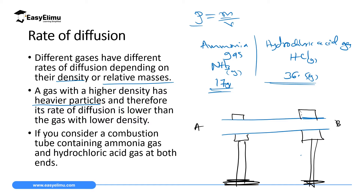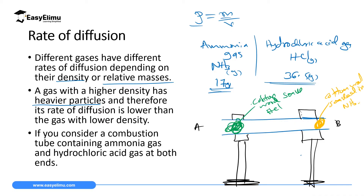On side A we put a cotton wool soaked in HCl, which will produce hydrochloric acid fumes. On side B we put a cotton wool soaked in ammonia, which will produce ammonia gas fumes. We then cork both ends to prevent the gases from diffusing outside.